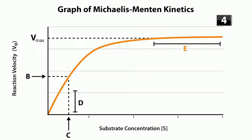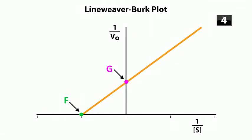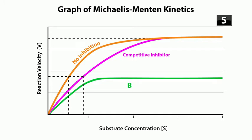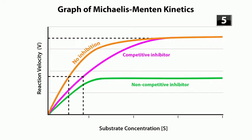Let's practice — look at questions 4 and 5 in your study guide. On the Michaelis-Menten graph, A is Vmax, B is one-half Vmax, and C is KM — the concentration of substrate needed to achieve one-half Vmax. D indicates the region of first-order velocity and E indicates the region of zero-order velocity. On the Lineweaver-Burk plot, F is 1 over negative KM, and G is 1 over Vmax — those two you'll probably have to memorize. For question 5, A is a competitive inhibitor where KM is increased but Vmax is unchanged, and B is a non-competitive inhibitor where Vmax is decreased. On the Lineweaver-Burk plot, C is a non-competitive inhibitor where Vmax is lower so the y-intercept moves up, and D is a competitive inhibitor where KM is changed.